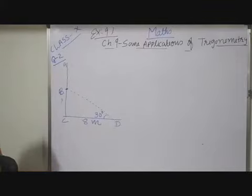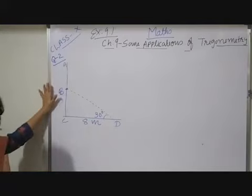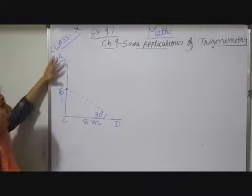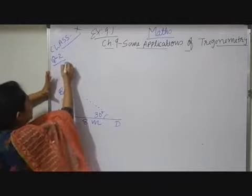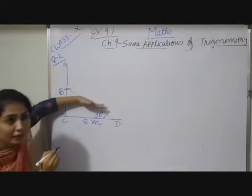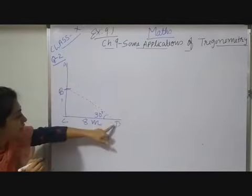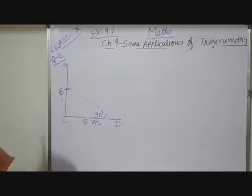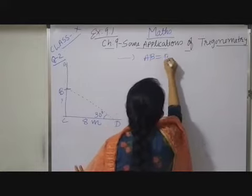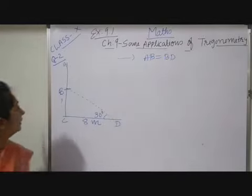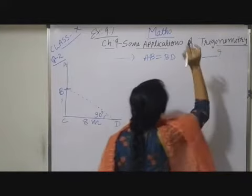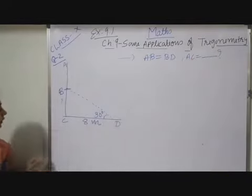Now here, the height of the tree you have to find out, which means you have to find AC. Now observe, from here it breaks down and this part obviously is falling down and its top is touching here. It means this length and this length will be equal. So here first of all I will specify AB is equals to BD. And I have to find out the height of the tree, that is AC.